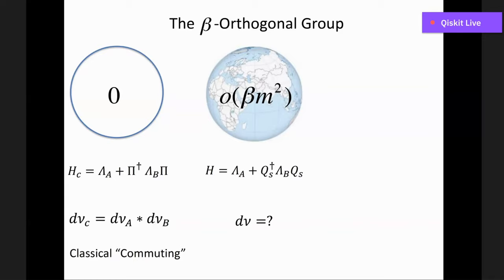One way to prove the central limit theorem for Gaussians is that cumulants are additive: you don't add densities, you add log-characteristics. The classical approximation — the convolution — cannot possibly be very adequate, because then we wouldn't have the richness of quantum systems, quantum computing, or quantum many-body systems with exotic properties.